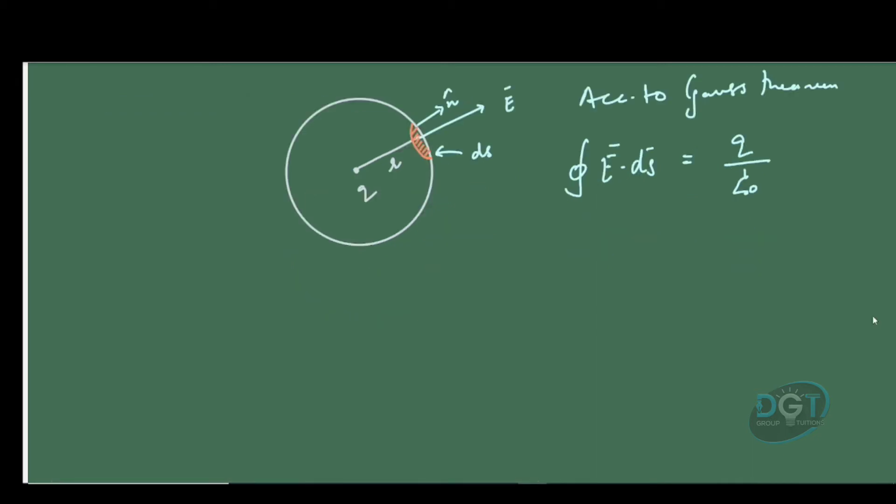The angle between the electric field and the area vector is zero since these two are parallel. Therefore, we can express this dot product as E·ds·cos(0) = q/ε₀. Since cos(0) = 1, this simplifies to E·ds = q/ε₀.